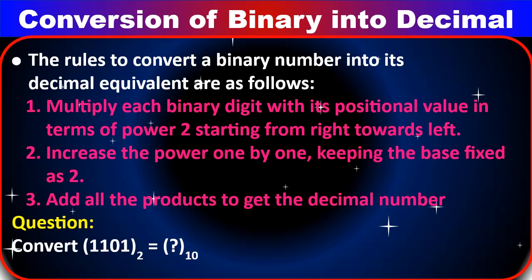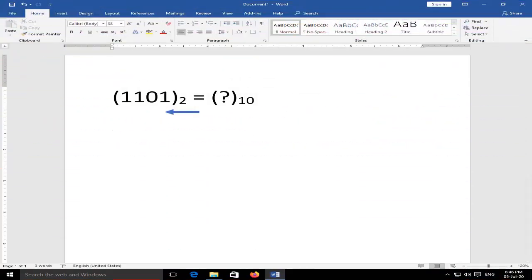Conversion of binary into decimal: Step 1 — multiply each binary digit with its positional value in terms of powers of 2, starting from right towards left. Step 2 — increase the power by 1 each time, keeping the base fixed as 2. Then add all the products to get the decimal number. Example: convert 1101 (base 2) to base 10.